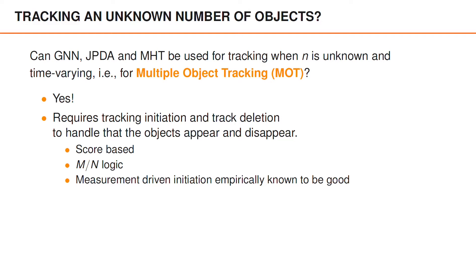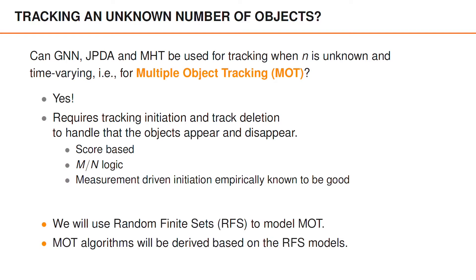Adapting to an unknown number of objects requires some methods for so-called track initiation and track deletion, which is the handling of when objects appear and when they disappear. Some methods for this found in MOT literature are, for example, the score-based method and M-over-N logic. Generally, there's a lot of empirical evidence that measurement-driven object initiation works well. However, we're not going to extend GNN, JPDA, and MHT in this way. Instead, we're going to use a powerful set of modeling tools called random finite sets in order to model MOT, and then show how MOT algorithms can be derived using this RFS modeling.